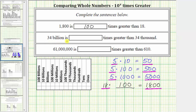Next, 34 billion is how many times greater than 34,000? To answer this question, we'll need to determine what we have to multiply 34,000 by in order to get a product of 34 billion, which is 34 followed by nine zeros.